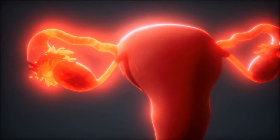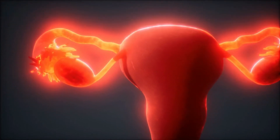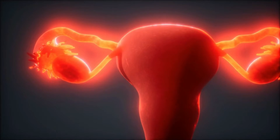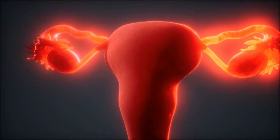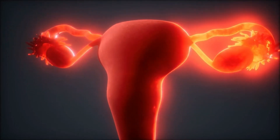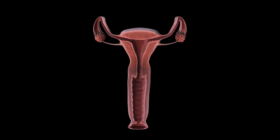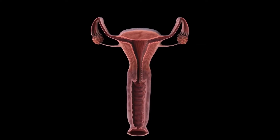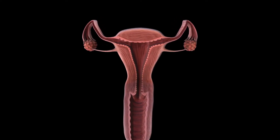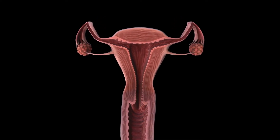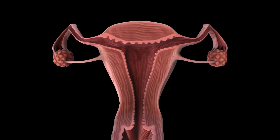Women or people assigned female at birth ovulate during their menstrual cycle. Ovulation is when your ovary releases an egg for fertilization. Tiny finger-like structures, called fimbriae, help guide the egg through your fallopian tubes towards your uterus.